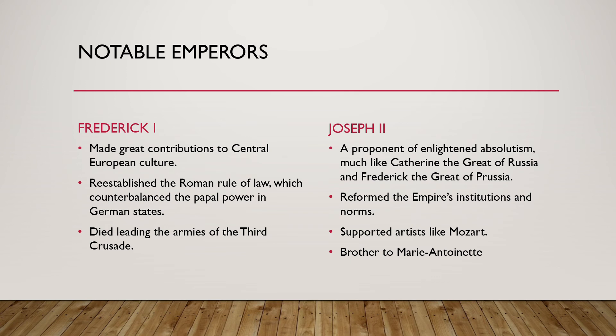Another notable emperor is Joseph II. He was an enlightened monarch, kind of like Catherine the Great and Frederick the Great of Prussia, and he reformed the empire's institutions and norms. He supported artists like Mozart, and he was Marie Antoinette's brother — who ended up getting beheaded in the French Revolution.